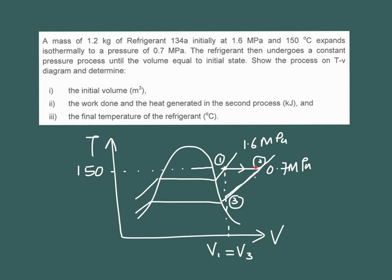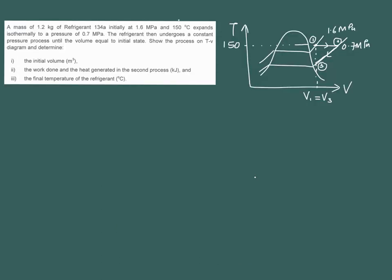The process works between two pressures: 0.7 and 1.6 megapascal. It starts at 1.6 megapascal and 150 degrees C, and it expands isothermally — meaning expansion is at constant temperature. When expansion happens, your volume is going to increase, moving towards the right. The process will stop at the pressure of 0.7 megapascal, and then undergoes a constant pressure process until the volume is equal to your initial state. So the volume at state 3 is the same as state 1.